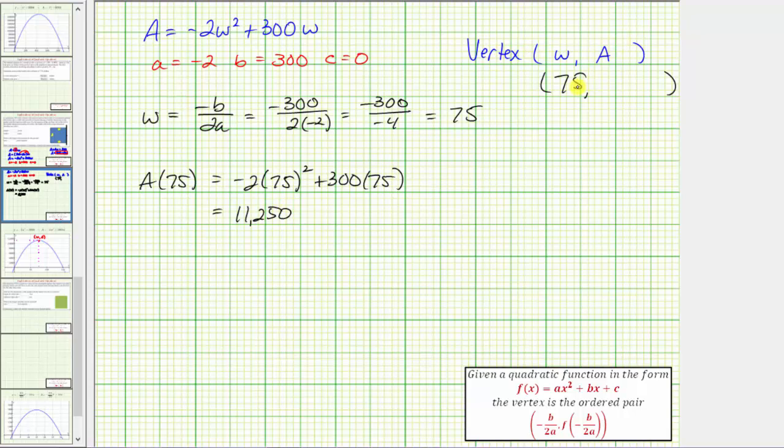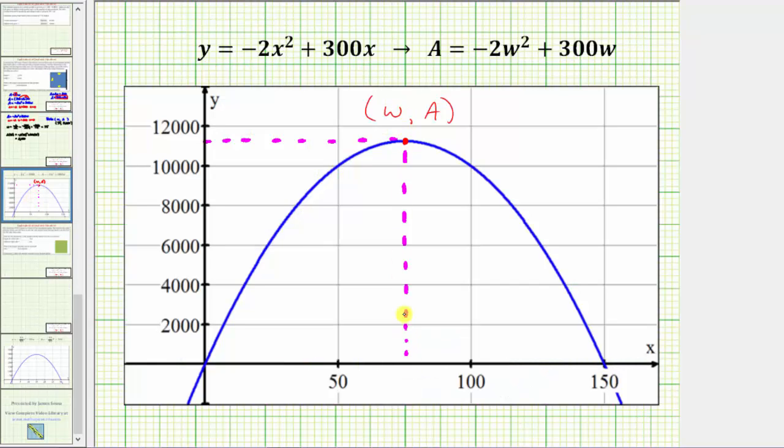So the coordinates of the vertex are 75 comma 11,250. Let's go back to our graph and just verify these values are correct. Notice how the w-coordinate is 75, and the a-coordinate does look like it's 11,250.